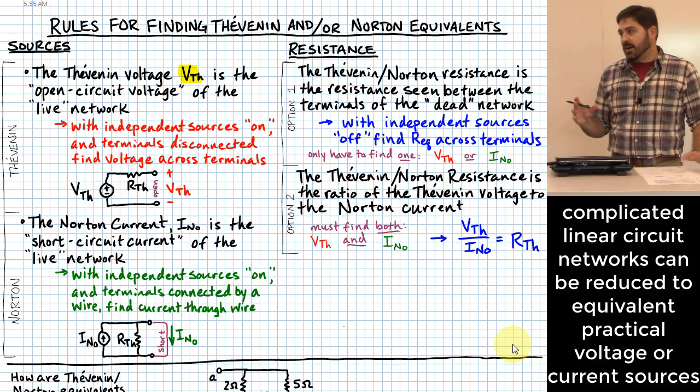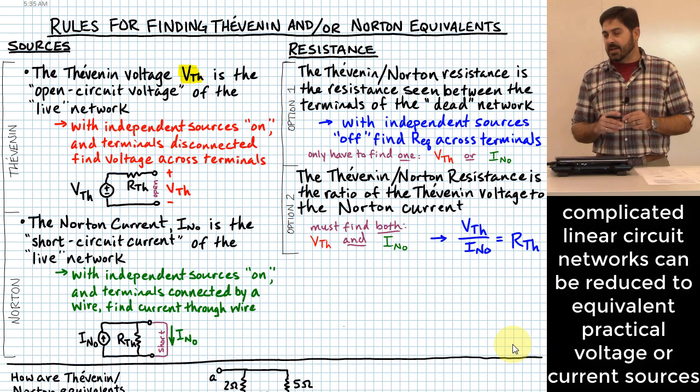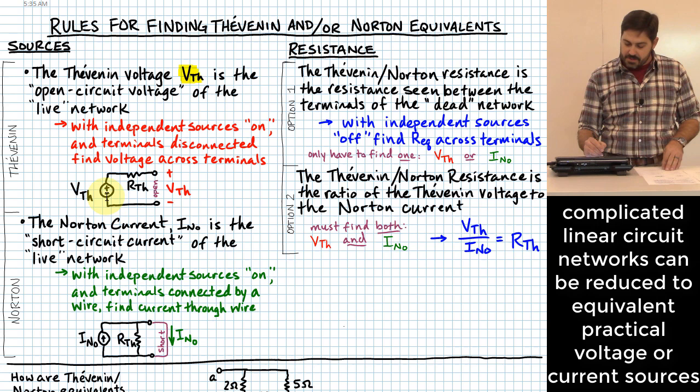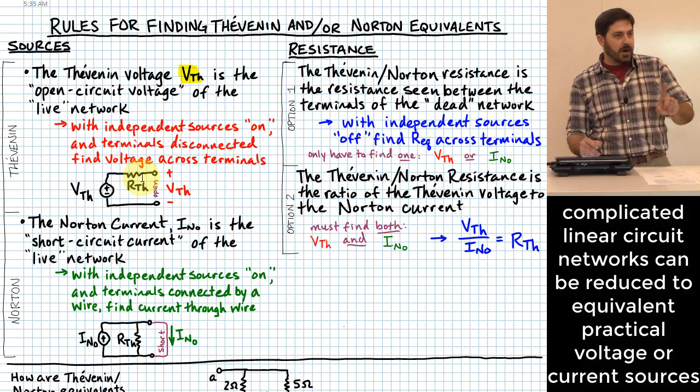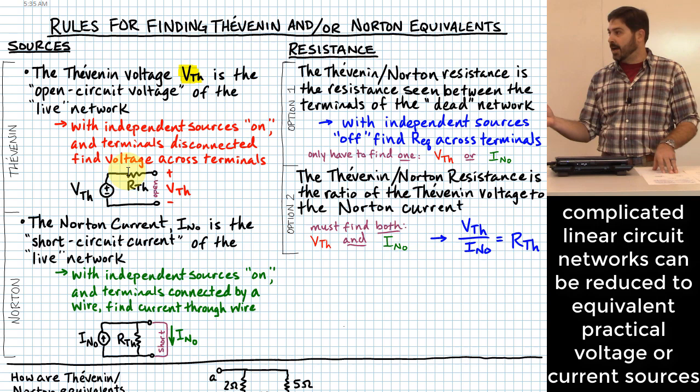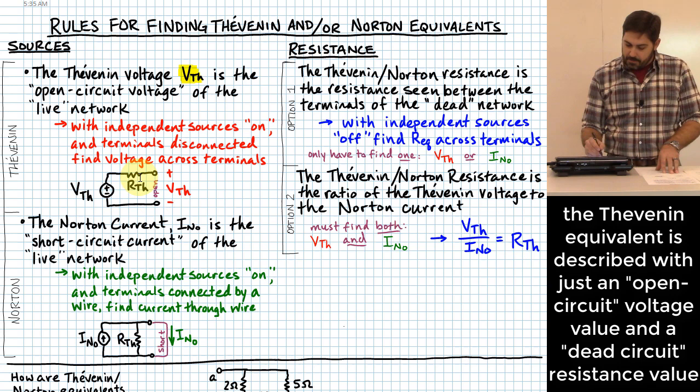The big idea is that no matter how complicated a circuit network might be that you are trying to analyze, as long as it is linear, that circuit network can be reduced to one of two different kinds of circuits — one of which has a voltage source in series with a resistance.